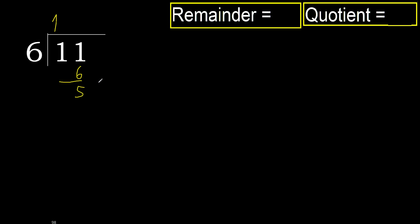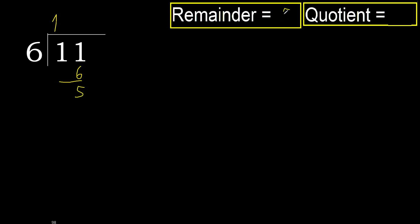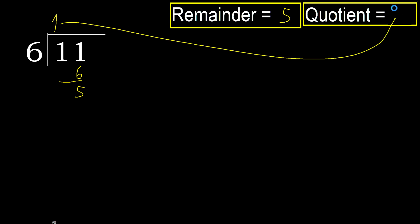Next. That is not a number, therefore finish: 5 remainder, 1 quotient. Ok.